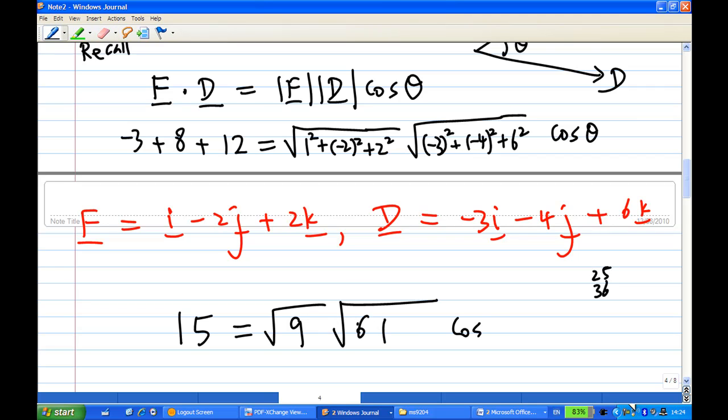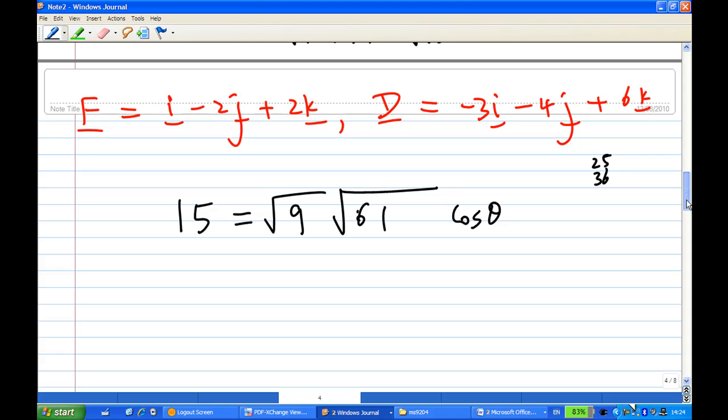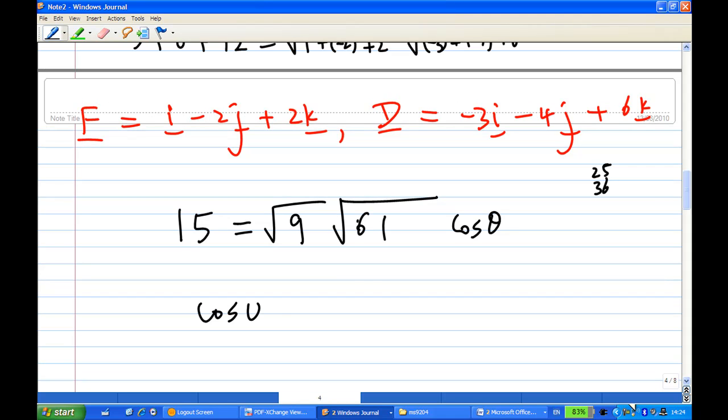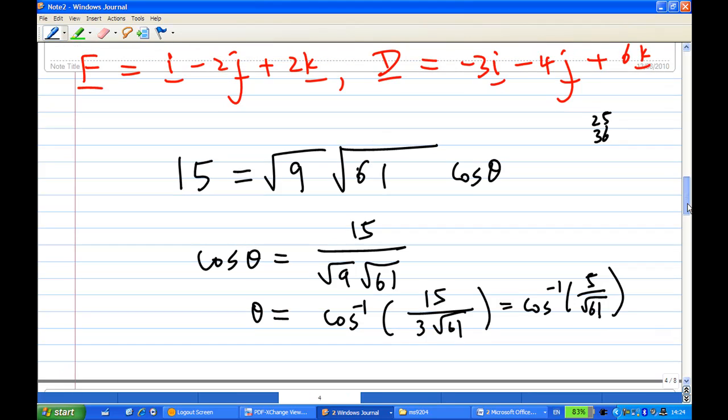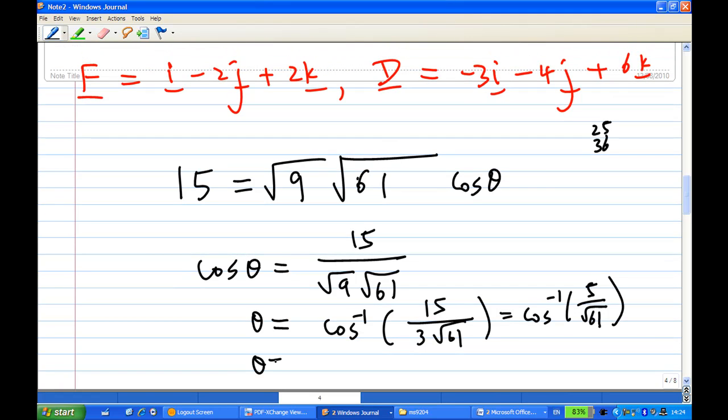You get cosine theta, which means that cosine of theta is equal to 15 over square root 9, square root of 61. So you can find out what theta is now by pressing a calculator: 15 over 3 times square root of 61, and you get cosine inverse of 5 over square root of 61.